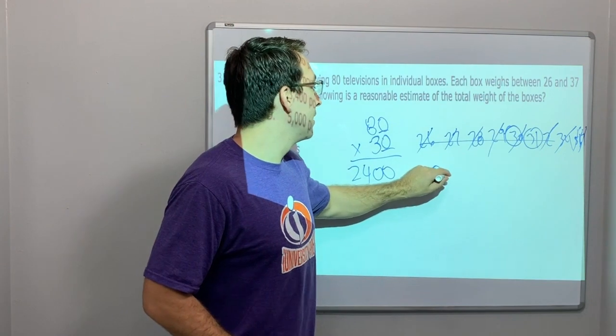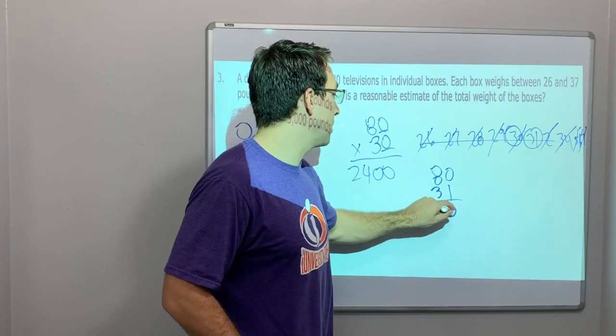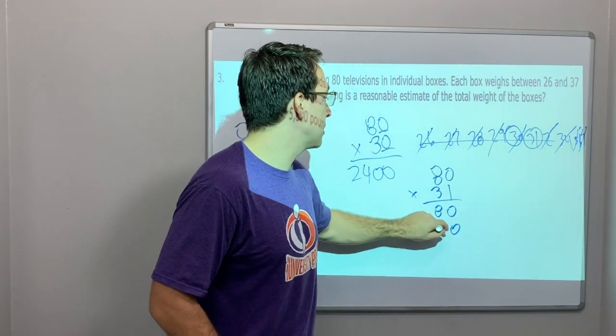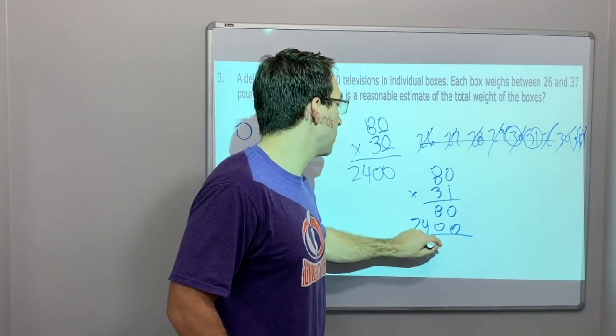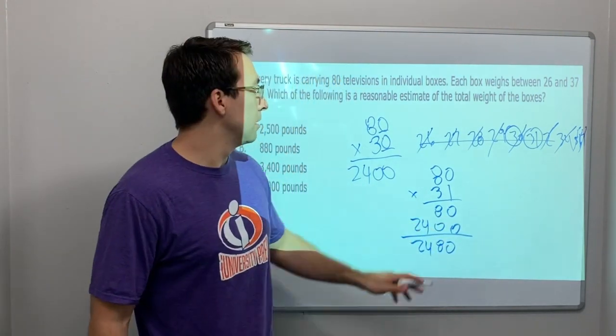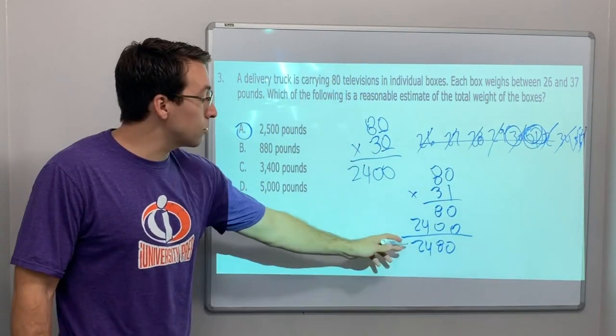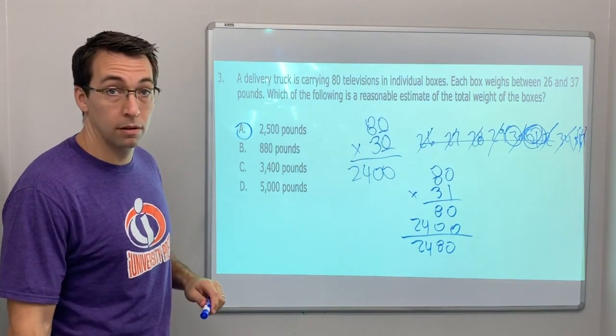What is eighty times thirty-one? Let's see: zero, eighty. Three times zero is zero, three times eight is twenty-four. Look at this: 2480. Eighty, eighty. So remember when I said thirty-one is the middle? Thirty-one times eighty is 2480. That's really close to 2500. So here we go.